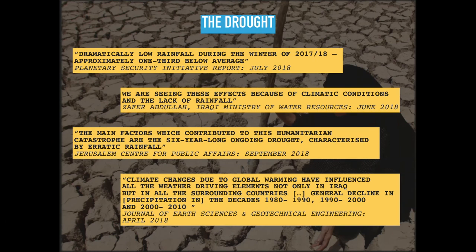The obvious answer is the drought in the region. A series of sources speak to the extent of this drought: in the winter of 2017-18 they had one third less rainfall than average; the Iraqi minister of water resources blames climatic conditions and lack of rainfall; another source from the Jerusalem Center for Public Affairs talks about a six-year-long ongoing drought characterized by erratic rainfall; and a scientific source from the Journal of Earth Sciences describes how climate changes due to global warming have caused a general decline in precipitation not just in recent years but over the last few decades. This is a long-term trend which reached an acute point over the winter of 2018, reduced water levels, and then caused this crisis.